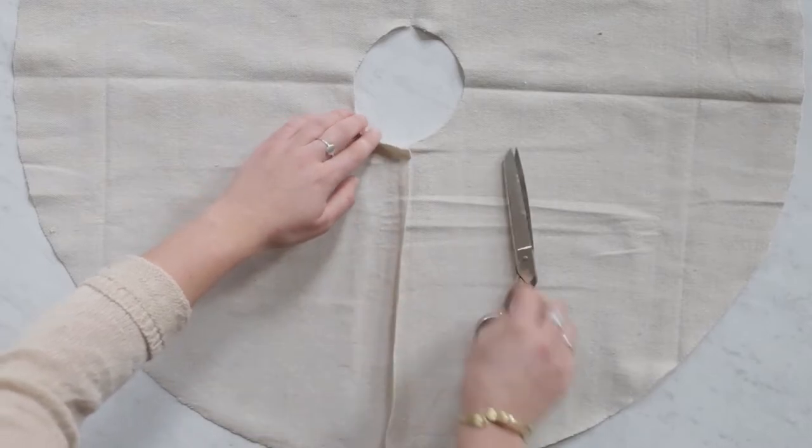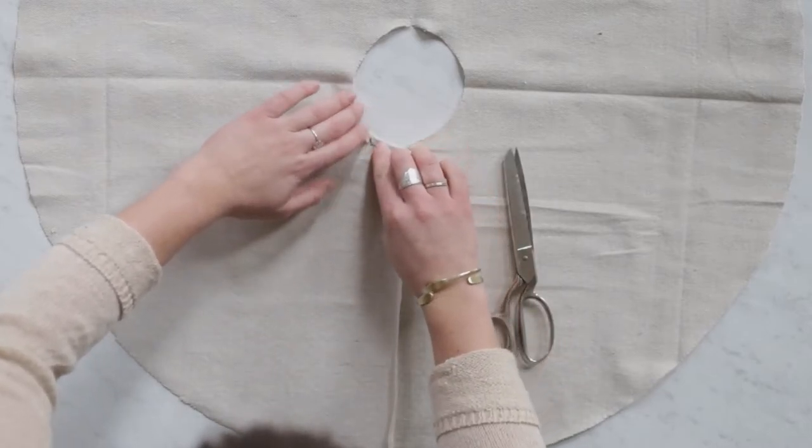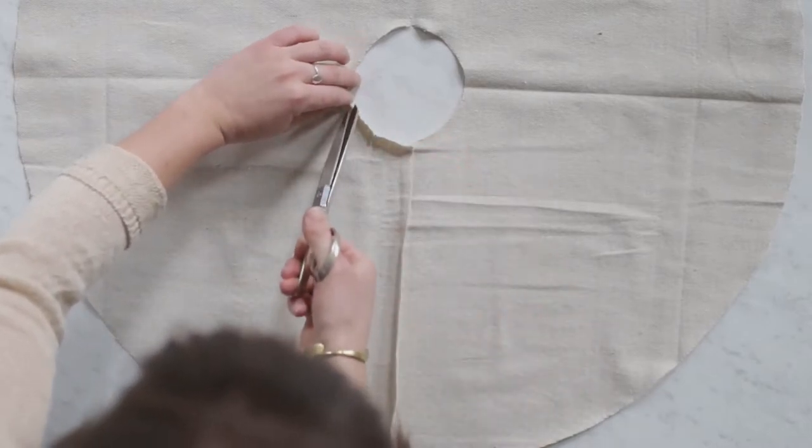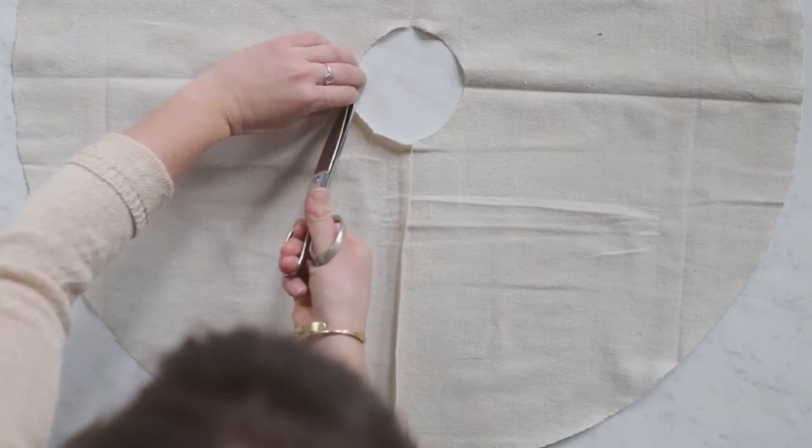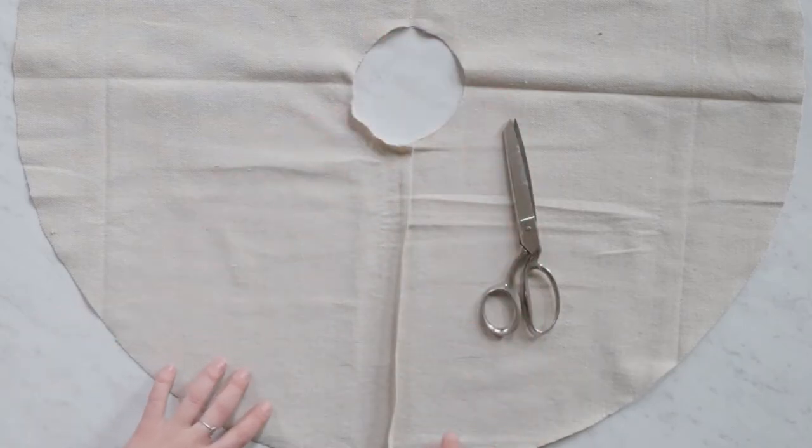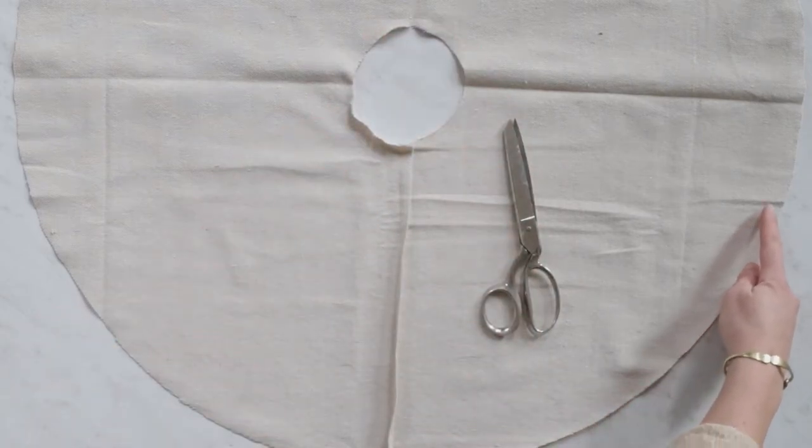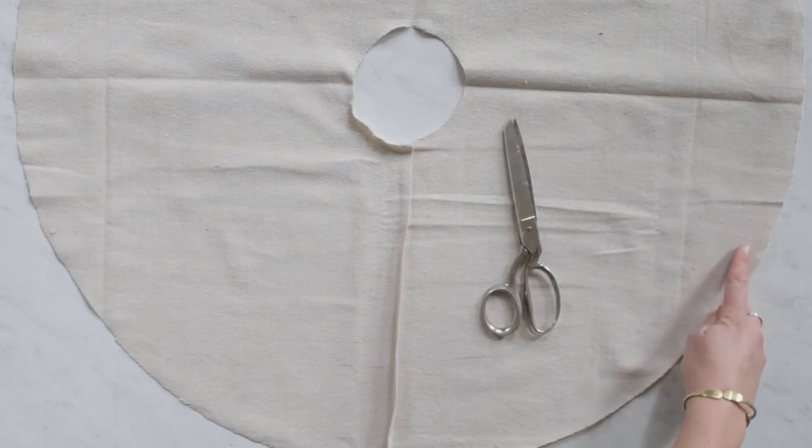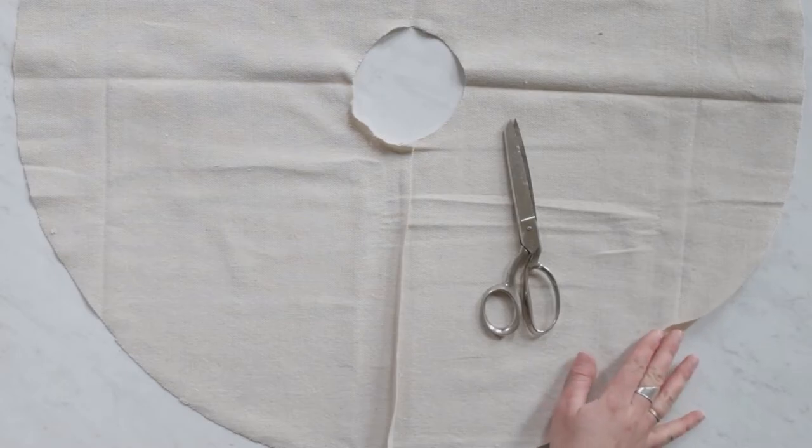And then on the outer edge I'm going to first just straight stitch along the edge, probably about three quarters of an inch in, and then I will show you what to do next.